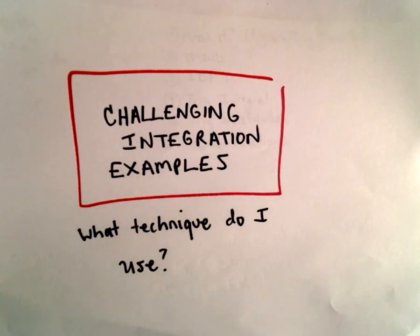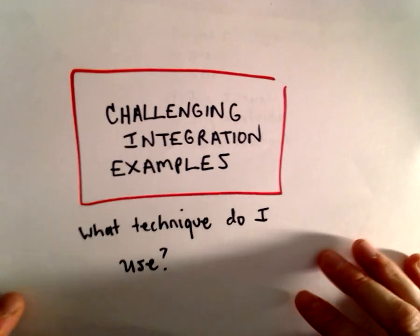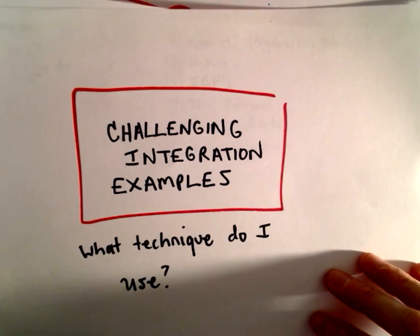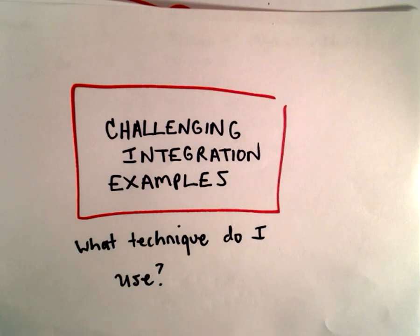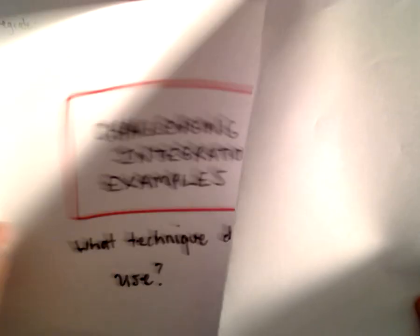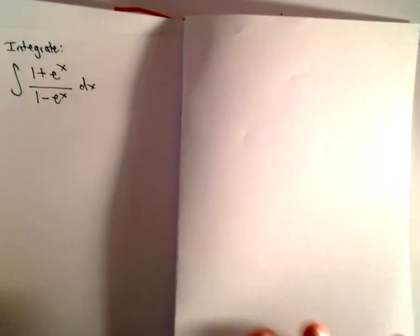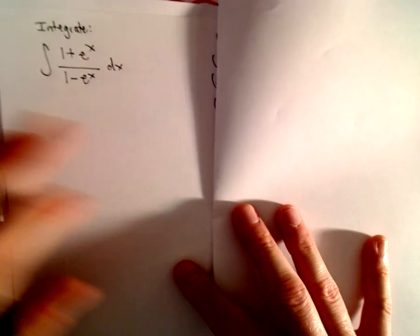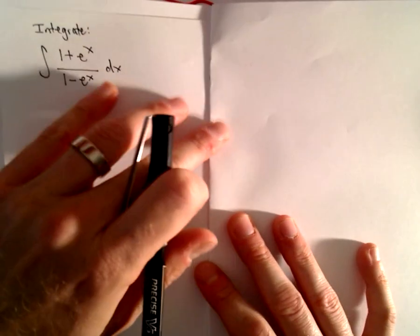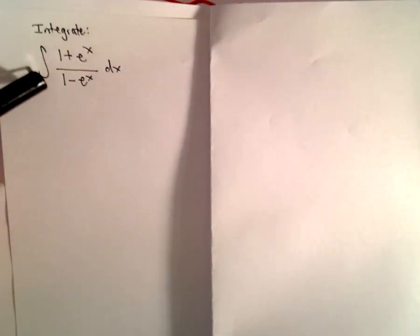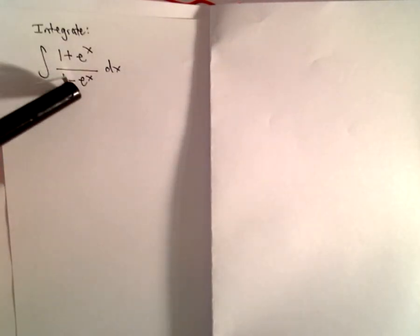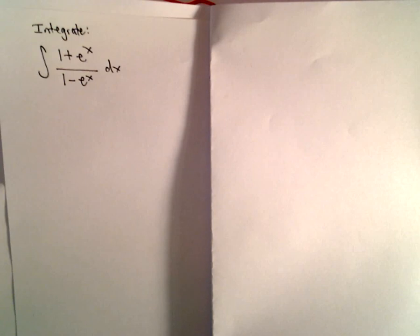This is the difficulty with integration — it's not always clear what to do. But let me show you some slightly more challenging examples where it's not always clear what to do, and let me show you how I tend to approach them. So maybe this one's not the most impossible problem, but I would ask you: do you know how to integrate (1 + e^x) / (1 - e^x) dx?